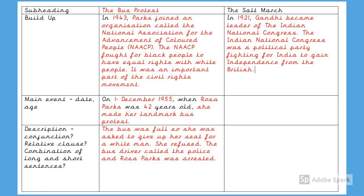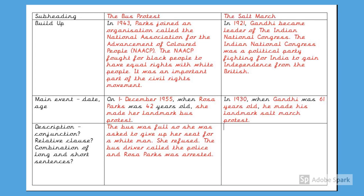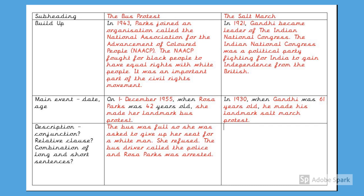If you have a date for when the build up event happened, use the date as a fronted adverbial in the same way that the text map and my innovated example do. After you've described the build up to the main event, the next section of your box up describes the actual main event. You should have the date that the main event happened and ideally the age that the person was when the main event happened. I'd really like you to use the vocabulary that we've been learning and include the word 'landmark' in your own innovation. And the next section just adds more detail and more description about the main event.